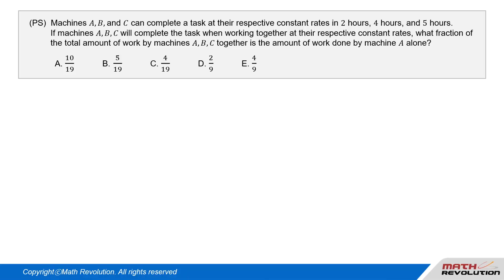Question 2, P.S. Machines A, B, and C can complete a task at their respective constant rates in 2 hours, 4 hours, and 5 hours.